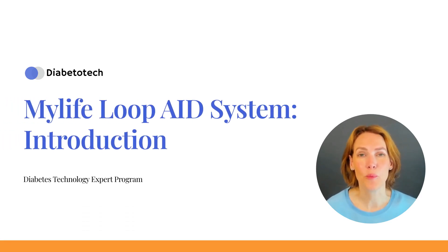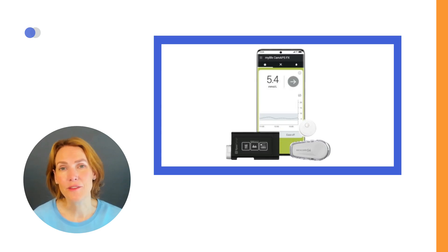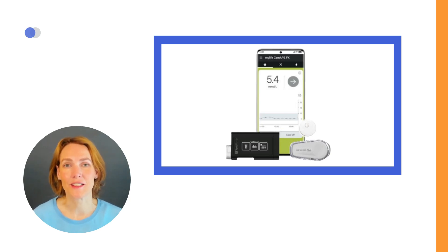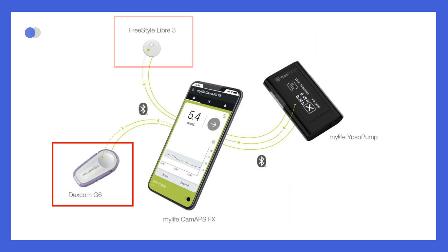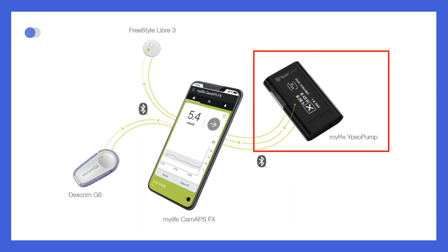Welcome to this module about the MyLifeLoop Automated Insulin Delivery System. This relatively new automated insulin delivery system from Ipsomed uses the CAM-APSFX algorithm developed in the UK, and is the first automated insulin delivery system with the Freestyle Libre3 sensor. The MyLifeLoop AID system consists of three main components: the Dexcom G6 or Freestyle Libre3 sensor, the CAM-APSFX algorithm as an app on your phone, and the MyLife Ipso Pump Insulin Pump.